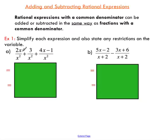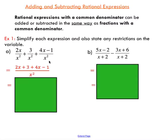Because these expressions have a common denominator, I can simply perform the operation. I can take 2x, add 3, and add 4x minus 1. Since we have a common denominator, I add straight across keeping my denominator the same. The next step is just to collect your like terms: 2x and 4x, then 3 and negative 1.